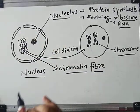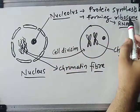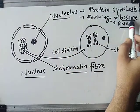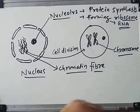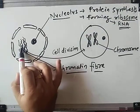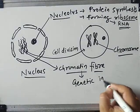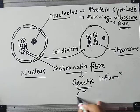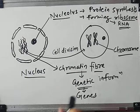Every part has a role. Nucleolus has a role in protein synthesis — it is involved in forming ribosomes and also making RNA, which stands for ribonucleic acid. Ribonucleic acid is later involved in protein synthesis. So nucleolus is overall involved in the protein synthesis mechanism. Chromatin fiber, or chromosome, contains genetic or hereditary information because it contains genes. Genes encode for specific characters in you — like your eye color, nose shape, and body shape.